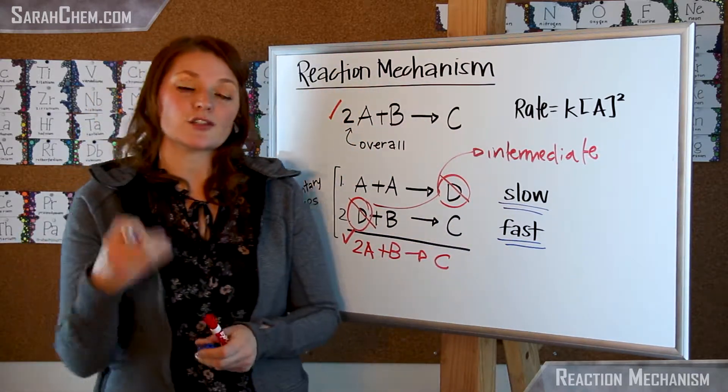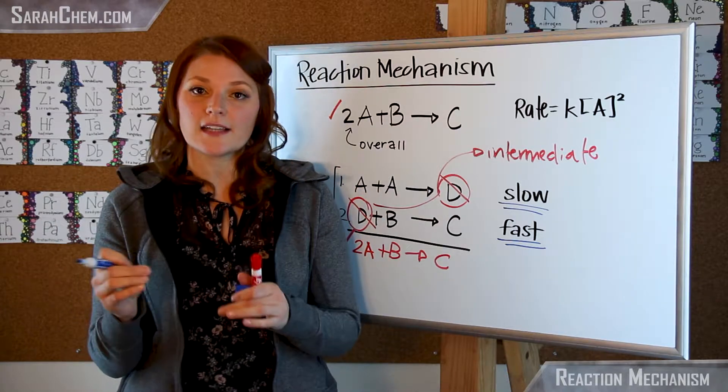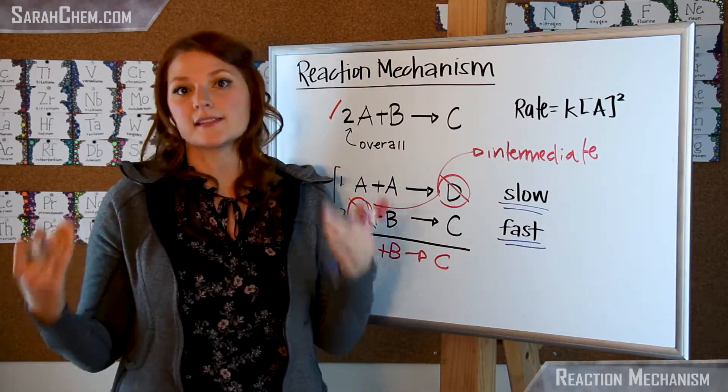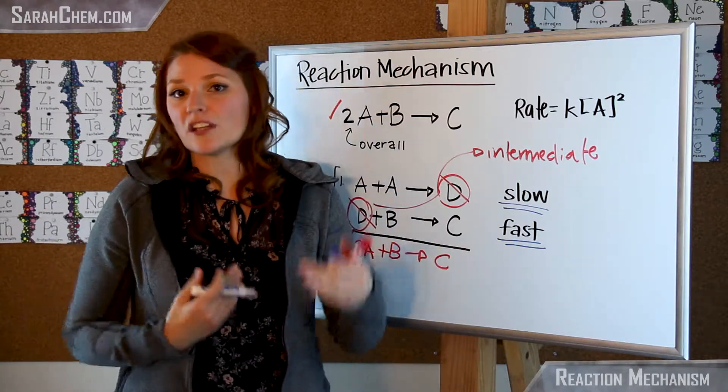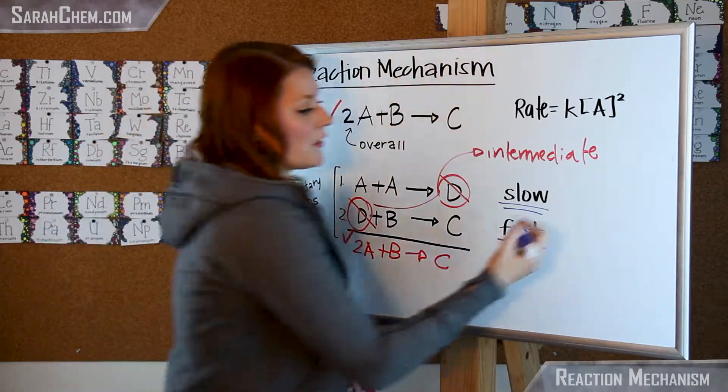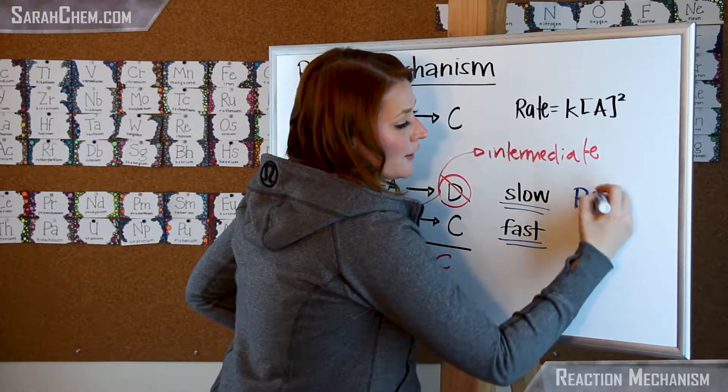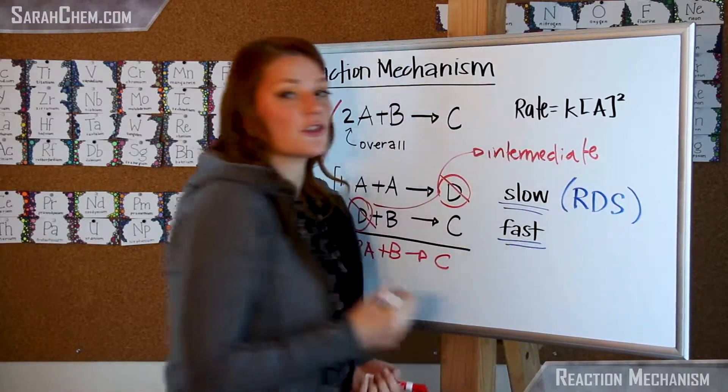So we have something called a rate determining step. The rate determining step is the same as the slowest step in your mechanism. Your reaction can only go as fast as the slowest component. So this one here, we're going to abbreviate RDS for rate determining step.